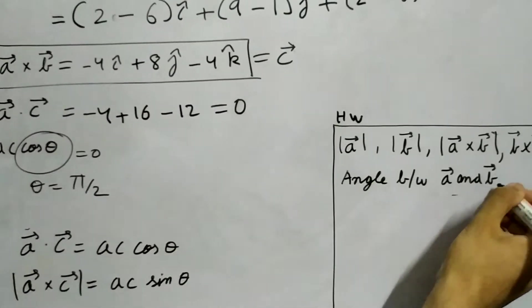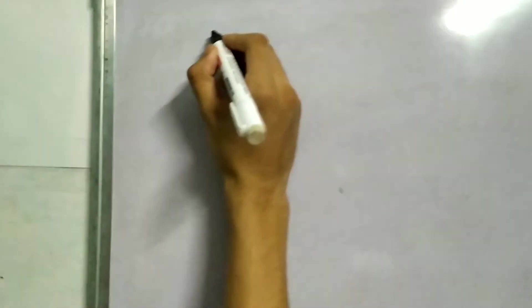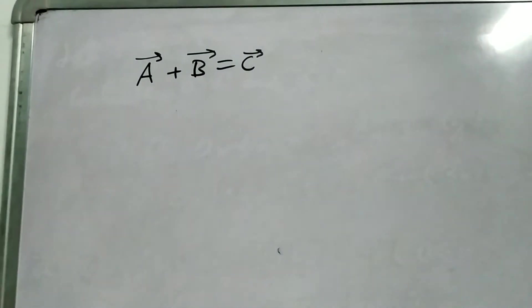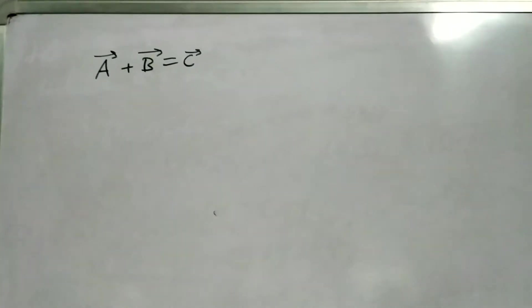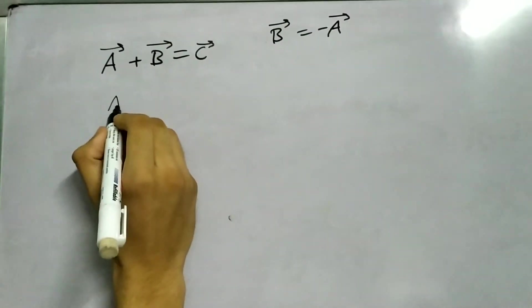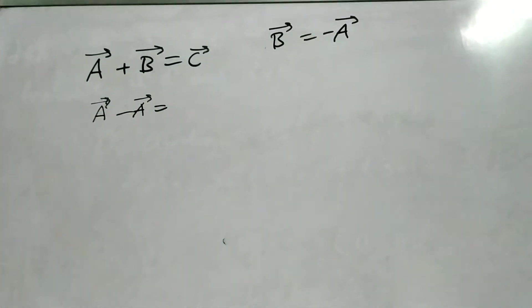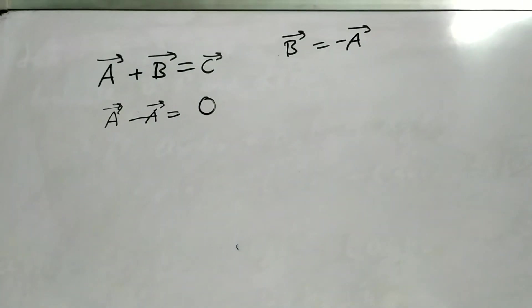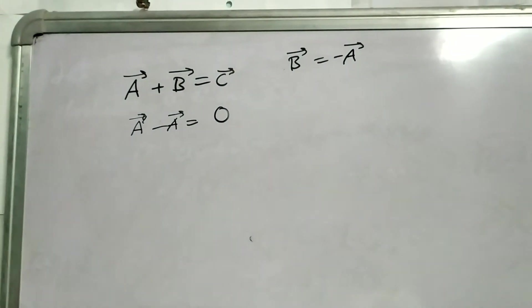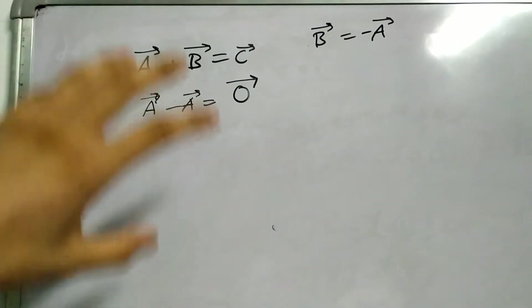With that being said, let us talk about another quantity, another vector called the null vector. Remember we said addition of two vectors gives a vector. Now we can simply choose B as minus A. This is very possible. So we get vector A minus vector A. What is this? This will be zero. But the difference of two vectors should be a vector and zero is not a vector. Well, we can call this quantity A minus A as zero with arrow on top. And we call this the null vector.